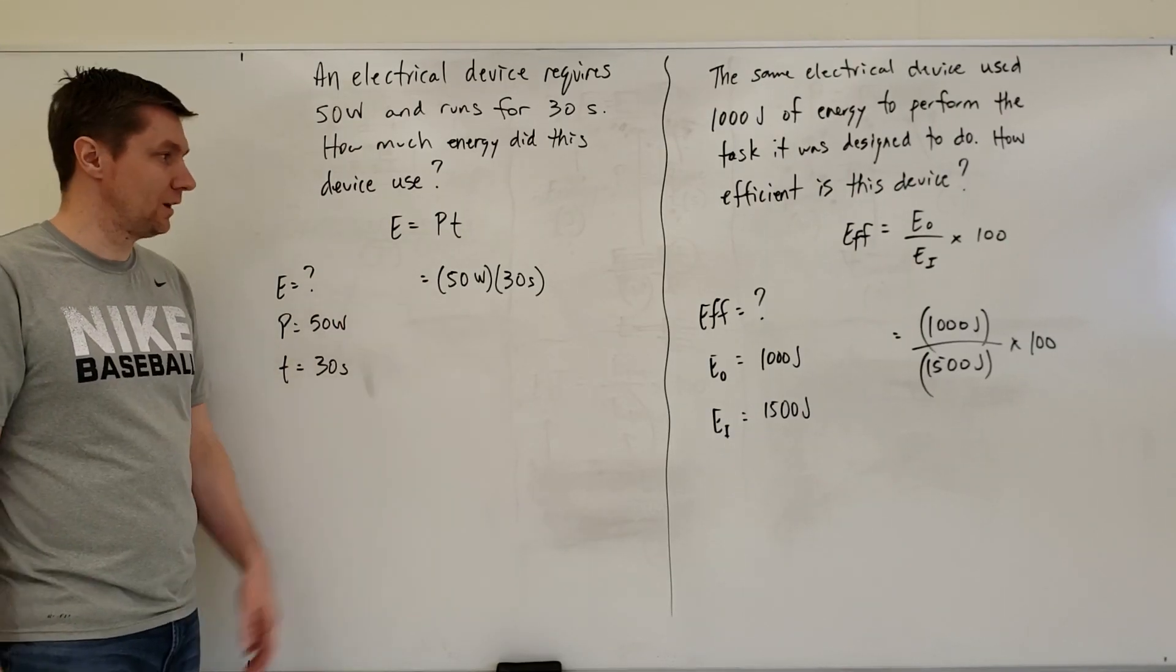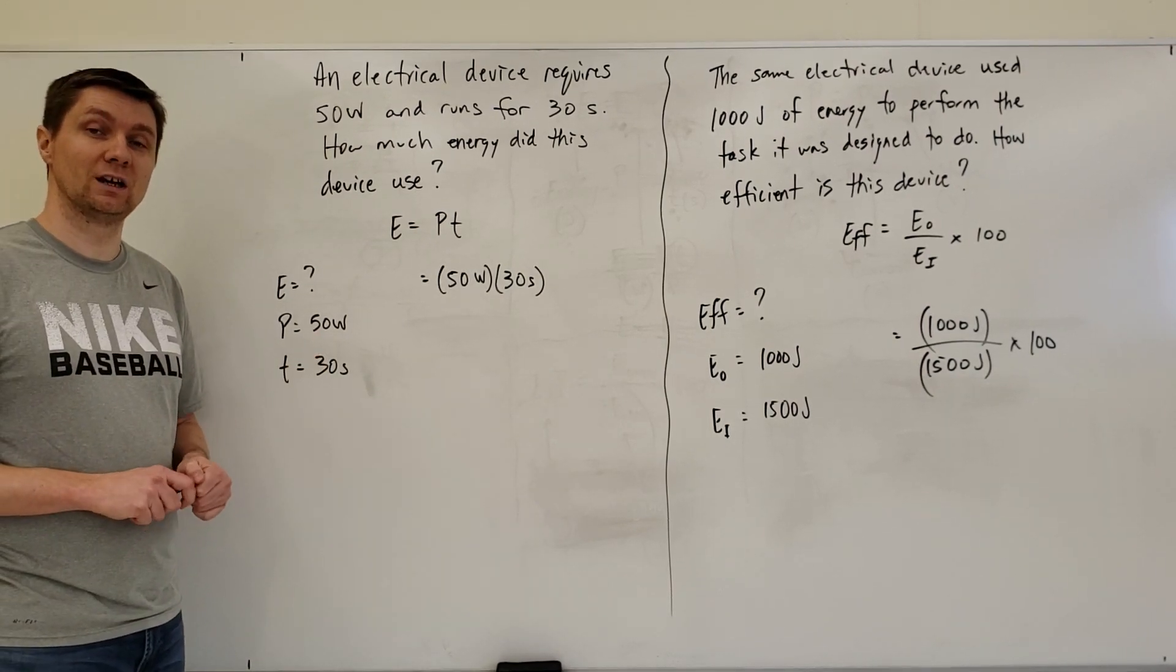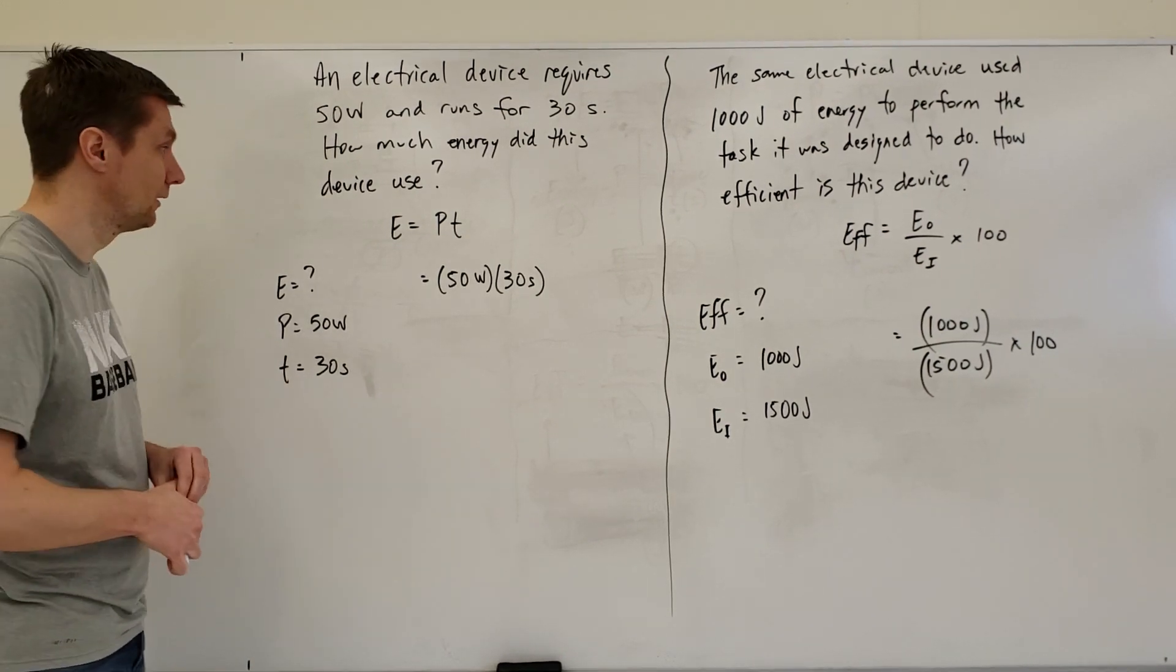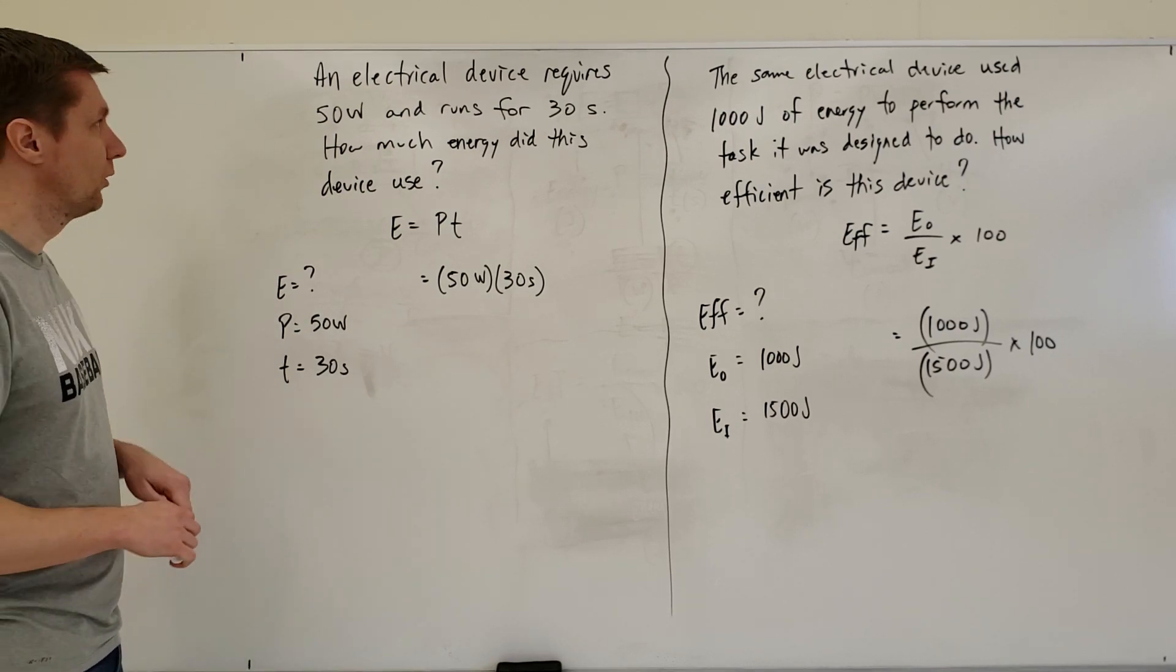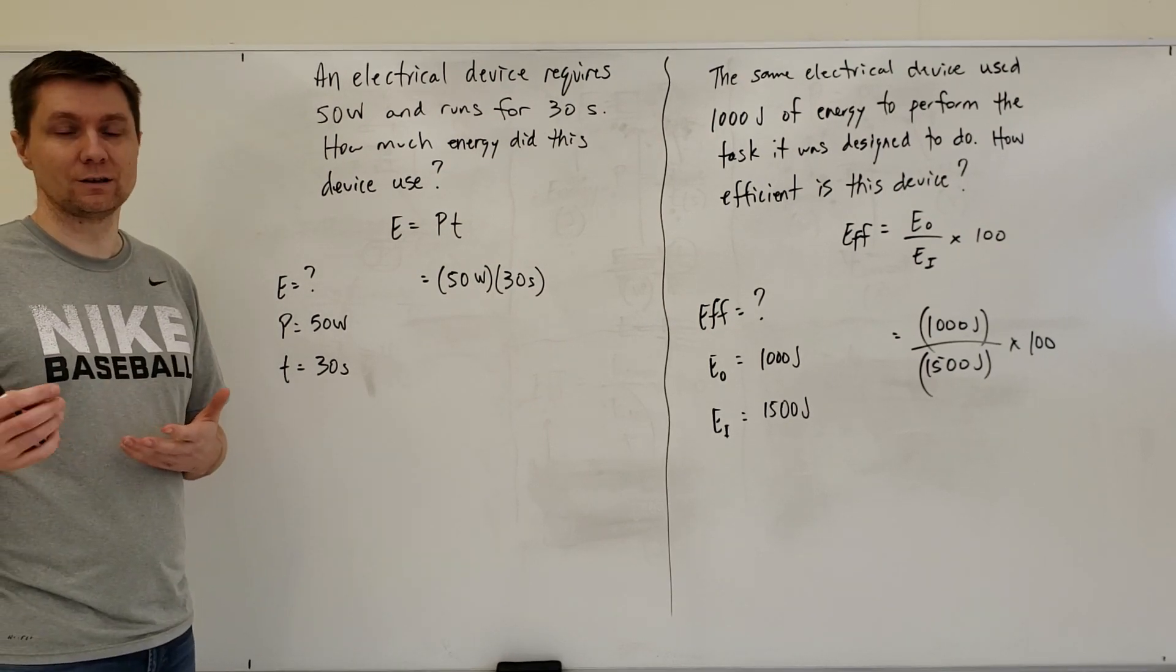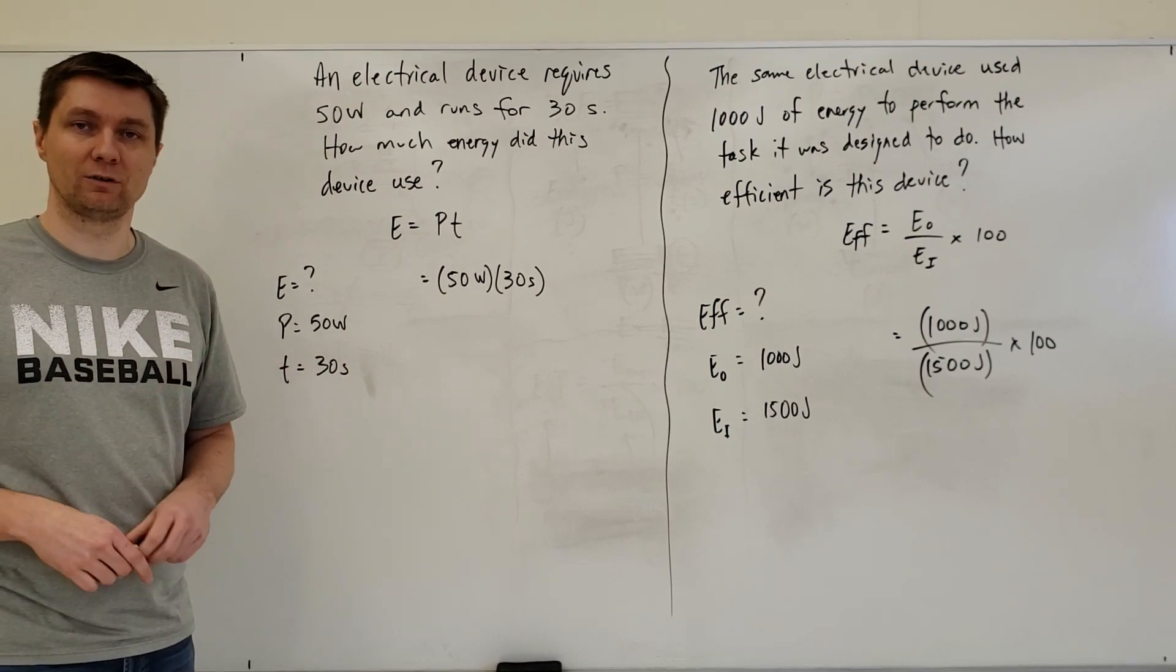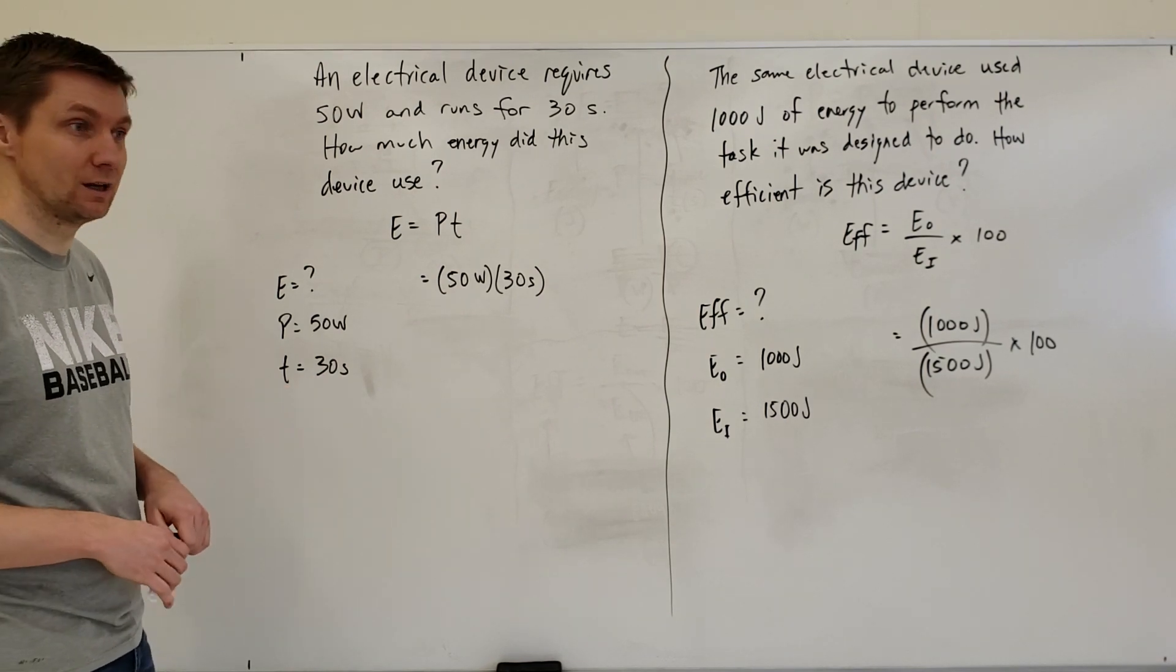Here's a generic practice problem: an electrical device requires 50 watts of power and runs for 30 seconds. When this device runs for this period, it will draw a certain amount of electrical energy out of the outlet. This problem wants you to calculate how much energy it takes in.